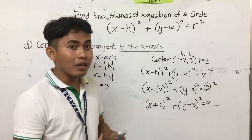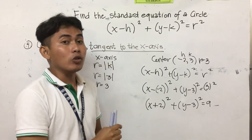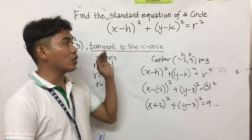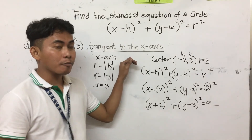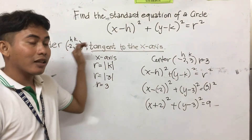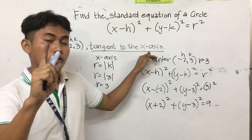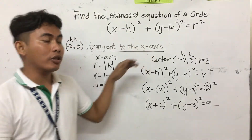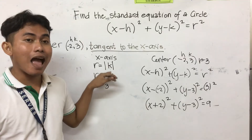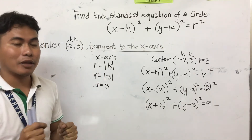Important note to remember: when the situation is center then tangent to the x-axis, the formula that you are going to use is radius equals the absolute value of k.